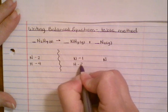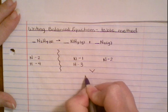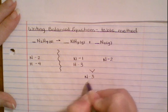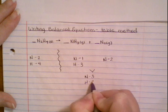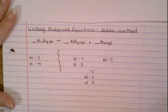So my total number of nitrogens on the right is three, and three hydrogens. Now we want the number of nitrogens and hydrogens to equal one another out, so what are we going to do?